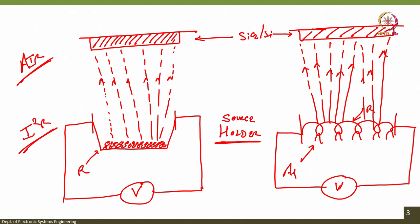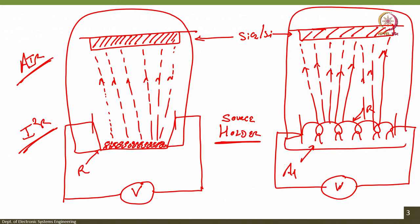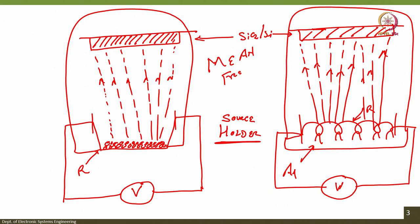To achieve this, the solution is vacuum — the entire system is kept in a vacuum chamber. There is a term called mean free path, and the mean free path increases in the presence of vacuum.